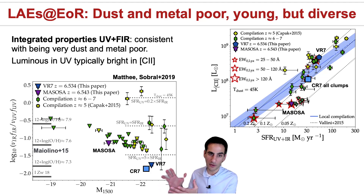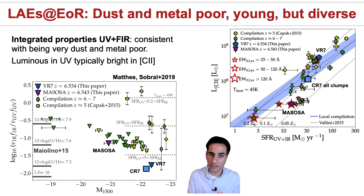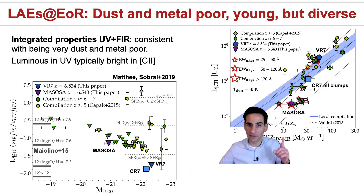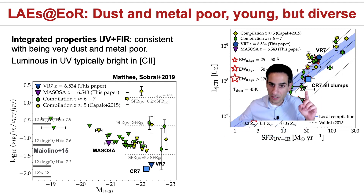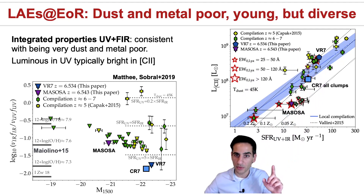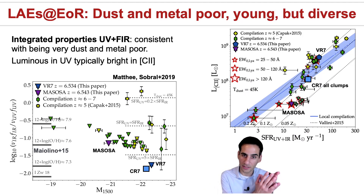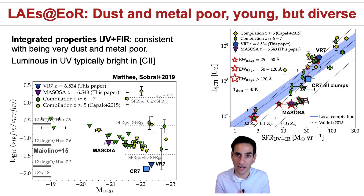Looking at integrated properties — specifically the ratio between infrared and UV — all these sources remain undetected in the dust continuum. Interpreting this non-detection in terms of metallicity implies they are incredibly metal-poor and definitely dust-poor. C2 provides a different picture and highlights the diversity among these luminous Lyman-alpha emitters: Masosa remains undetected in C2, CR7 is moderately luminous in C2, and VR7 is very luminous in C2, consistent with the trend that higher combined star formation rate predicts higher C2 emission.